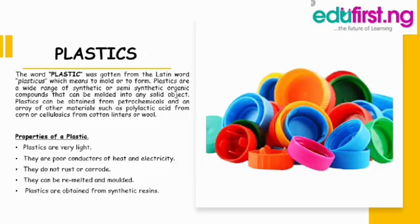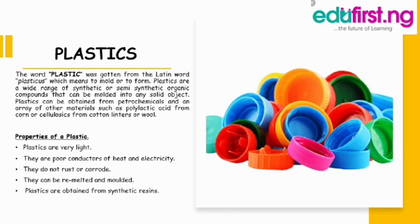The word plastic itself comes from the Latin word 'plasticus' which means to mold or to form. Plastics are a wide range of synthetic or semi-synthetic organic compounds that can be molded into any solid object. Plastics are majorly gotten from crude oil, and they can also be gotten from polylactic acid which comes from corn, and cellulose which comes from cotton wool.